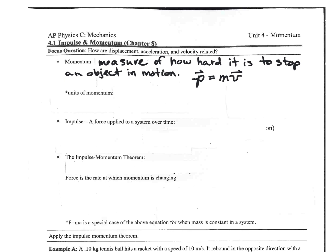Units of momentum don't have any special units. Mass is kilograms and velocity is meters per second, so momentum units are kilogram meters per second. It is a vector quantity, which means direction does matter — the direction is the same as the velocity.